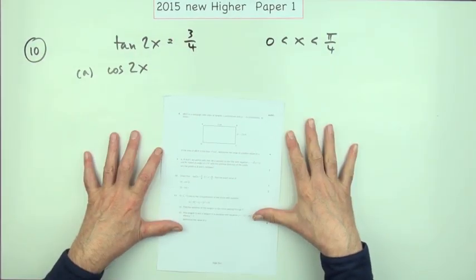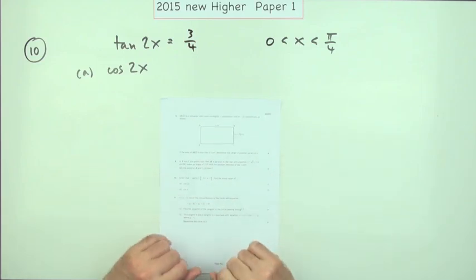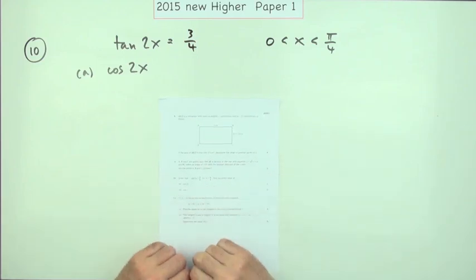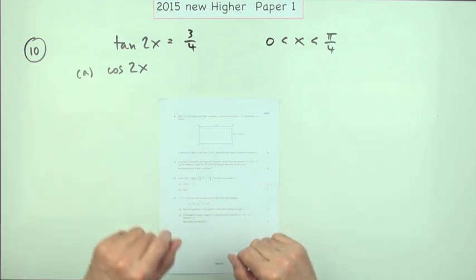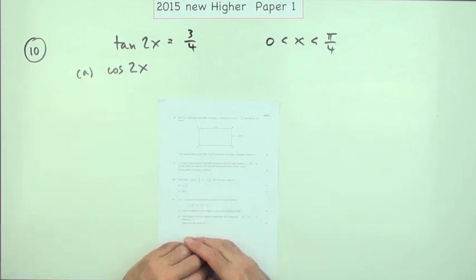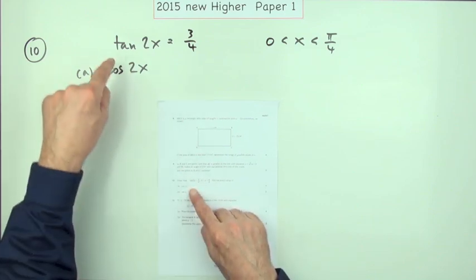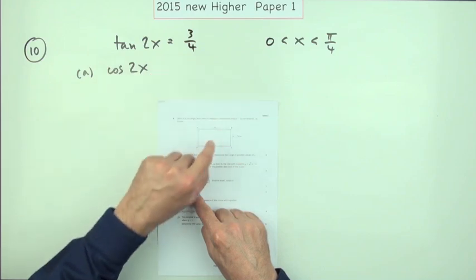Number 10 from the 2015 new Higher Paper 1, a little three mark question. This is your triangles and angles question. Given the value of the tan of 2x, what's the cosine for just one mark?